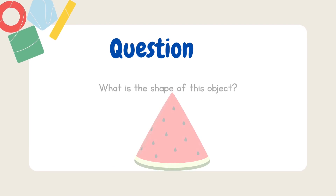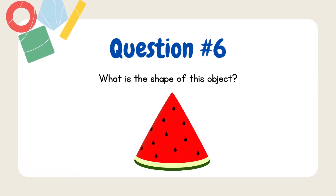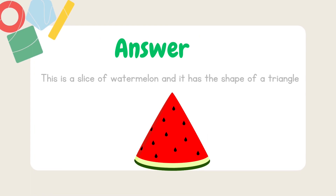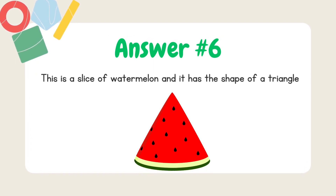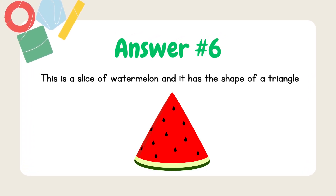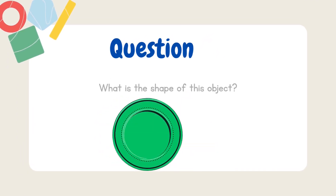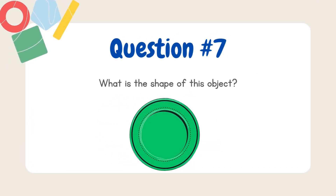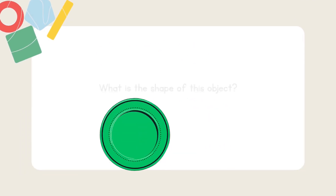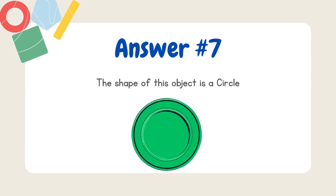What is the shape of this object? This is a slice of watermelon and it has the shape of a triangle. What is the shape of this object? The shape of this object is a circle.